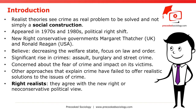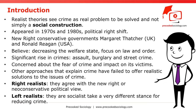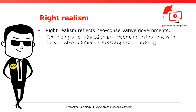There are two approaches to realist theory, divided along political lines. Right realists agree with the new right or neo-conservative political view, while left realists are socialists and take a different stance for reducing crime. Right realism reflects the political climate of neo-conservative governments during the 1970s and 1980s. For example, criminologists produced many theories of crime, but with no workable solutions to cut the rise in crime rates.